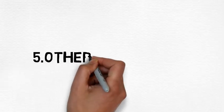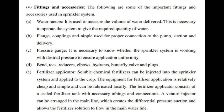Fittings and Accessories: The following are some important fittings and accessories used in a sprinkler system. Water meters are used to measure the volume of water delivered, which is necessary to operate the system to give the required quantity of water. Flange coupling and nipple are used for proper connection to the pump suction and delivery. A pressure gauge is necessary to know whether the sprinkler system is working at the desired pressure to ensure application uniformity. Other accessories include bend tees, reducers, elbows, hydrants, butterfly valves, and plugs.